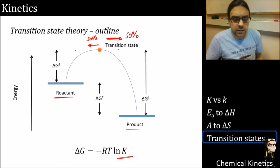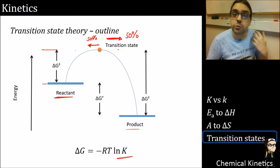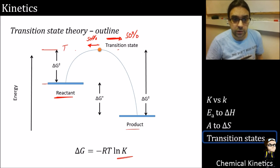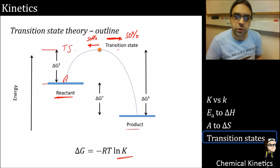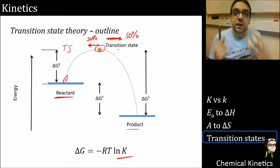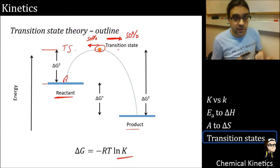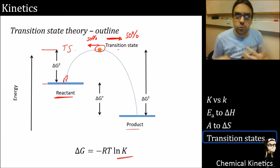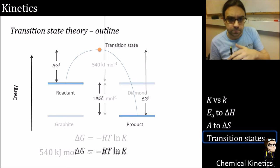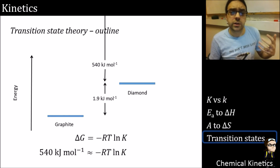We set up an equilibrium between the ground state reactant and the transition state. If we know the energy difference between them, we know how many molecules have enough energy to reach the transition state - not unlike the Maxwell-Boltzmann distribution and Boltzmann factor, but this is a more rigorous approach when we get into the maths.